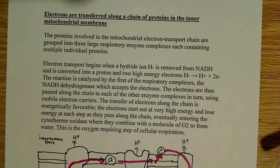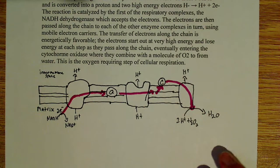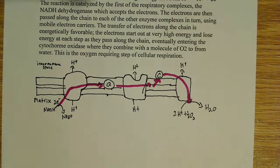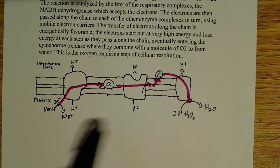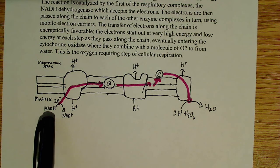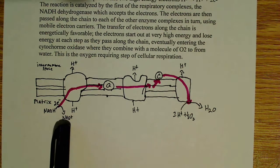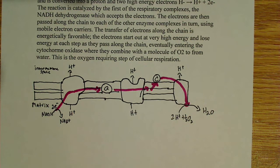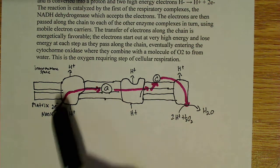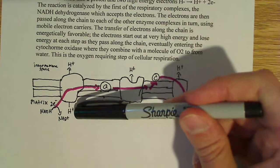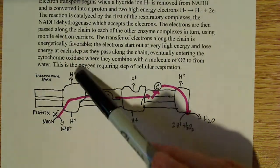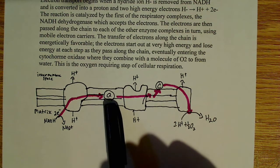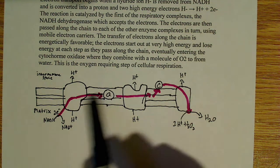Here I've drawn out the different respiratory complexes. Here's the inner membrane space, where the protons are being pumped, and here's the matrix. NADH donates two electrons here to become oxidized to NAD⁺. These two electrons go into the first complex — the NADH dehydrogenase complex. The electrons travel through, and some of the energy from the electrons moving through the complex is used to pump protons from the matrix to the inner membrane space. The electrons then travel along to ubiquinone, a mobile transporter.